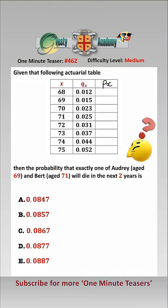First we should fill in Px, which is 1 minus Qx, so that's 0.988, 0.985, 0.977, 0.975, 0.969, 0.963, 0.956, and 0.948.